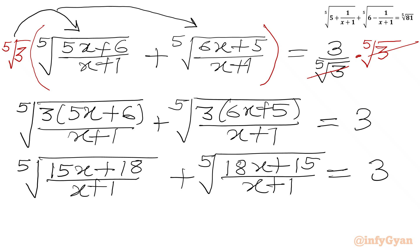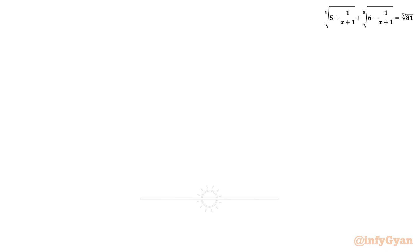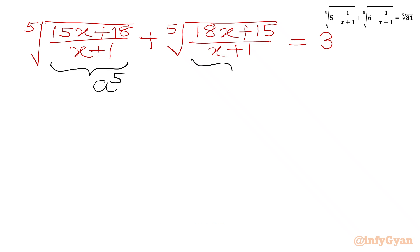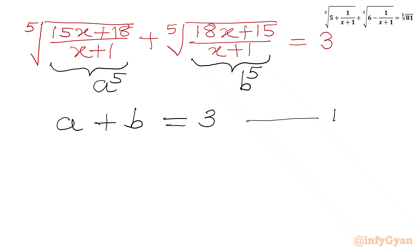Now we will consider substitutions. We will consider this radicand equal to a^5 and the other radicand equal to b^5. So I can write our first equation: fifth root of a^5 plus fifth root of b^5, which gives us a + b = 3. This is our equation number 1.